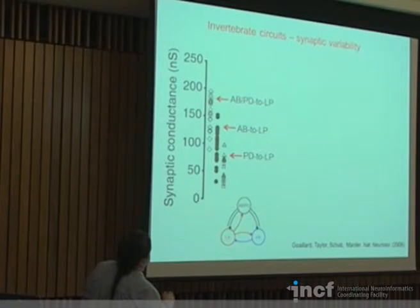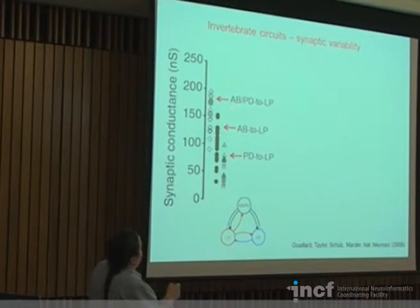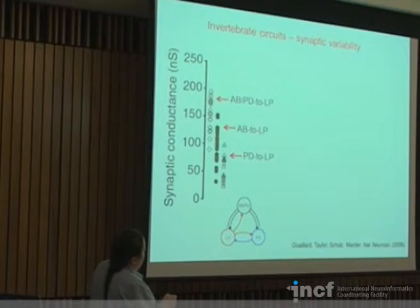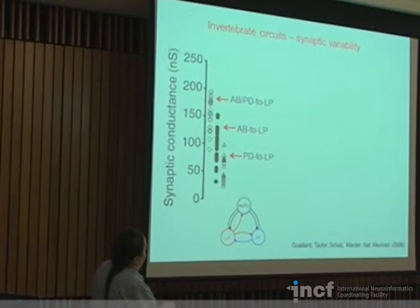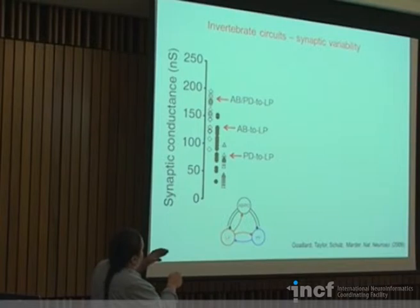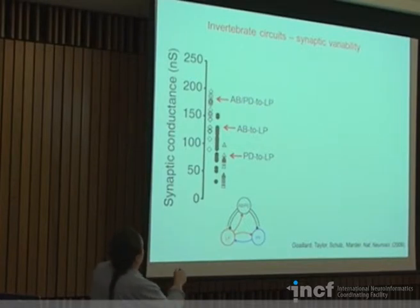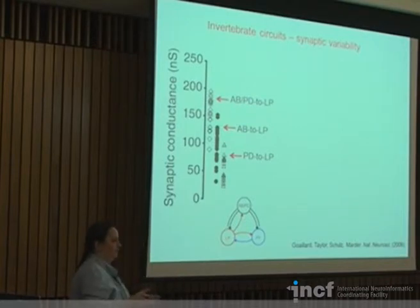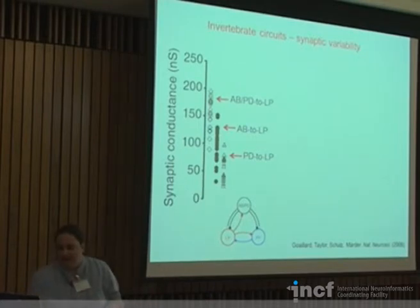This variability also extends to synaptic conductances — how strong are the inhibitory synapses in the circuit. Here is the synapse from the pacemaker to the LP neuron, broken down into the AB component and the PD component onto LP, since the pacemaker actually consists of two different cell types, AB and PD. Both the total synapse strength and each component individually are also variable. For example, this particular synapse goes from roughly 25 to 150 — a several-fold range of that same synapse strength between different animals.